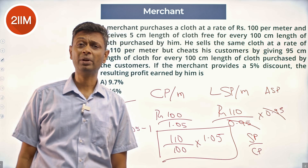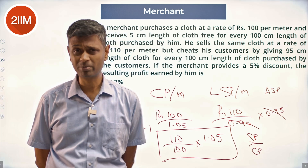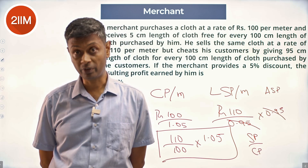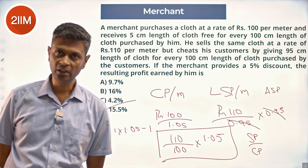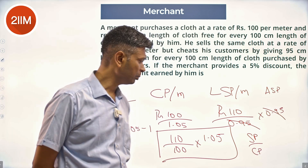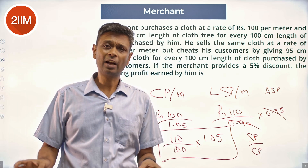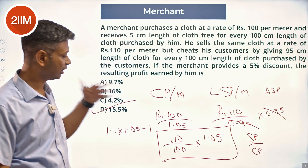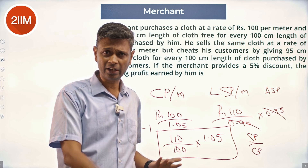I don't want selling price minus cost price — that's SP minus CP by CP into hundred. I just want selling price by cost price, leaving one point something, because he's making profit and that something is the profit percentage. So it's hundred and ten by one point zero five, or hundred and ten by hundred into one point zero five — giving one point one and one point zero five. That's ten percent higher and five percent higher; multiplying both gives a little more than fifteen percent.